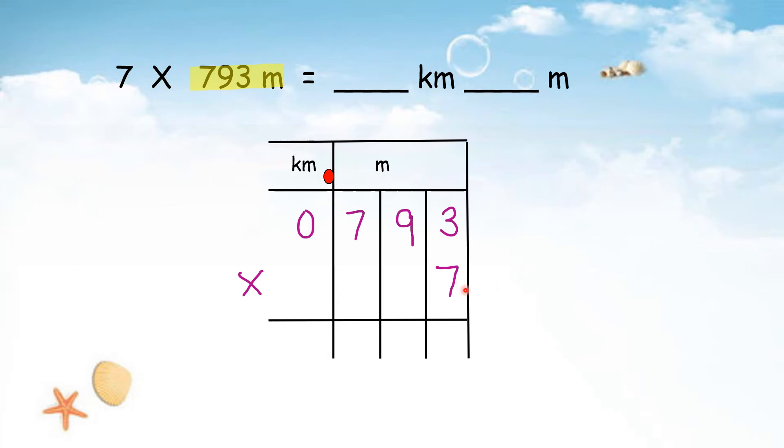Now we start from the back. Start to times. 7 times 3, 21. 7 times 9, 63, and then plus 2, 65. 7 times 7, 49. 49 plus 6 is 55. And then 7 times 0 is 0. 0 plus 5, 5. Now we refer to the answer, km and m. So for km, we write 5 km. For meter, it's 551. Means that 551 m meter.